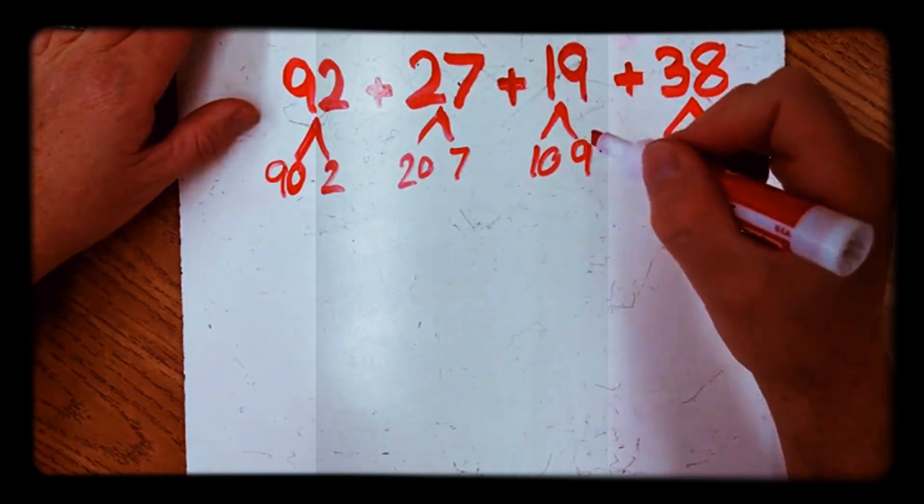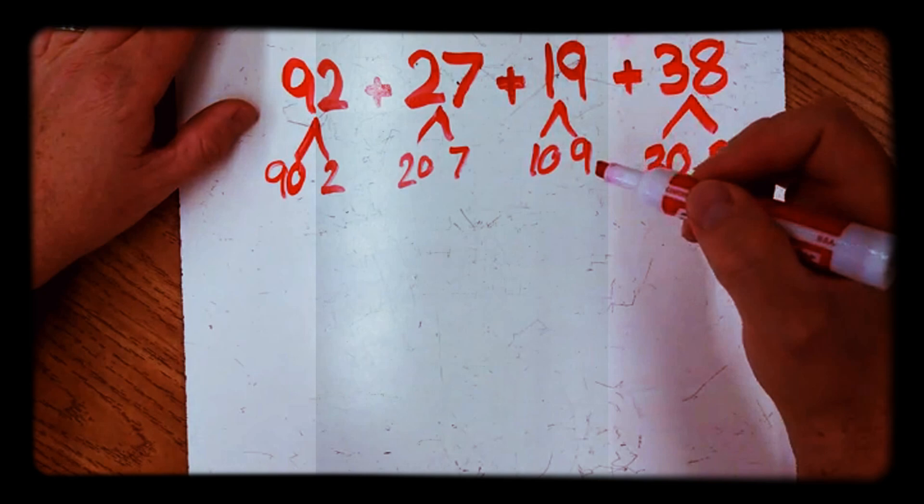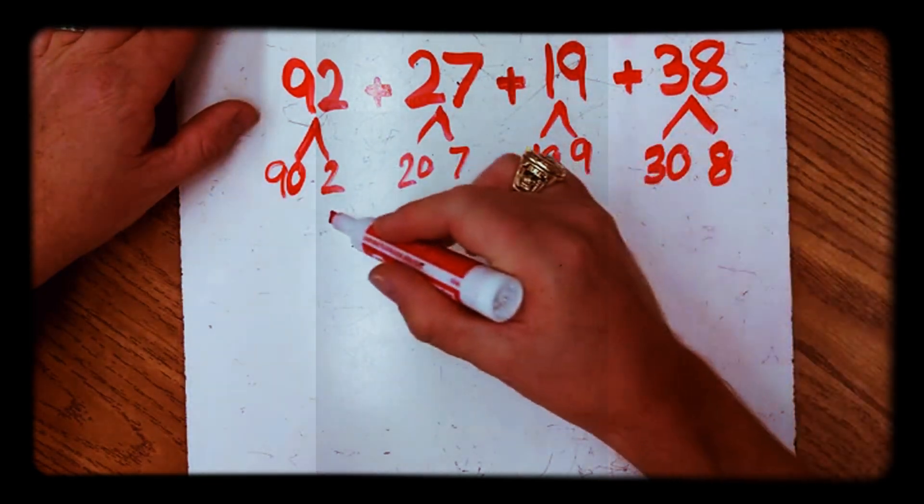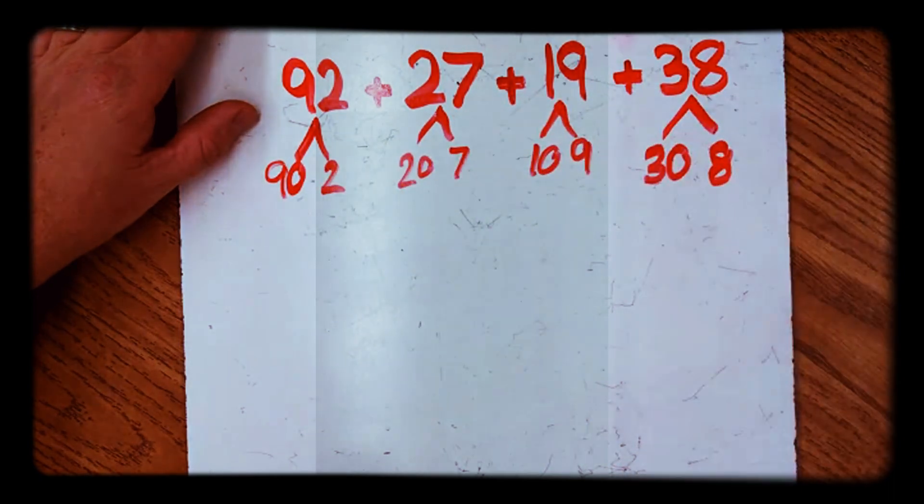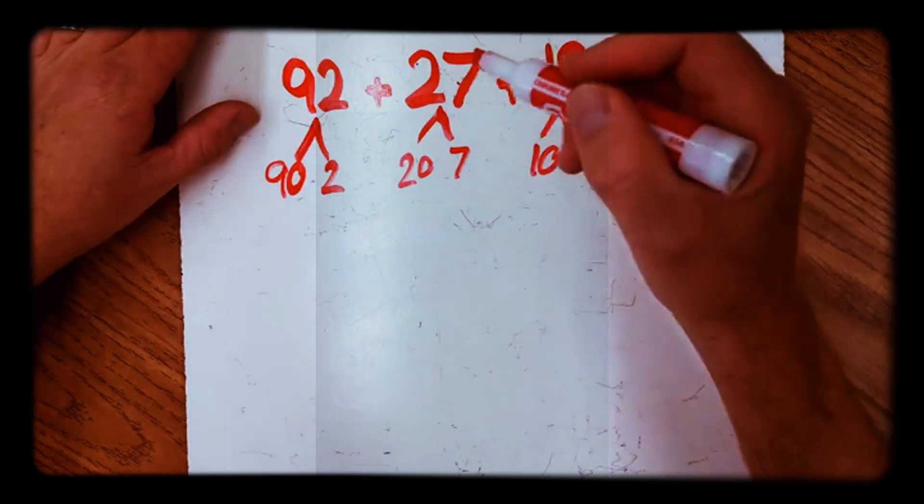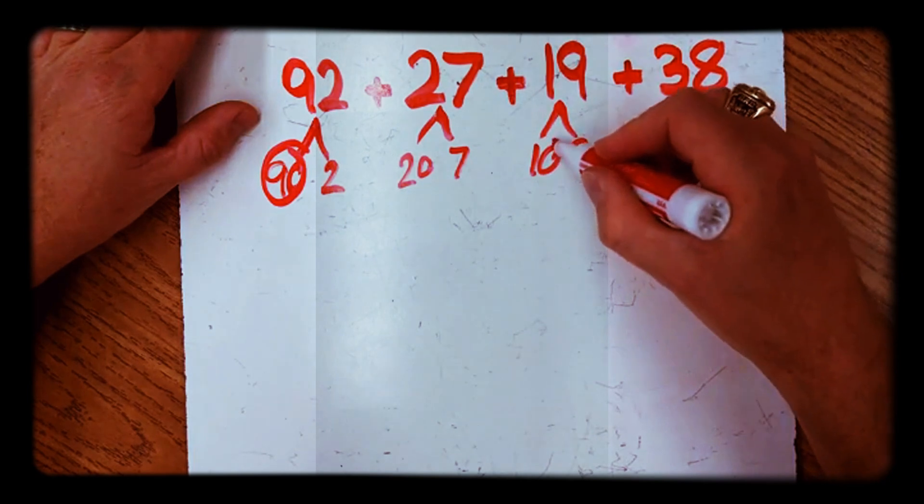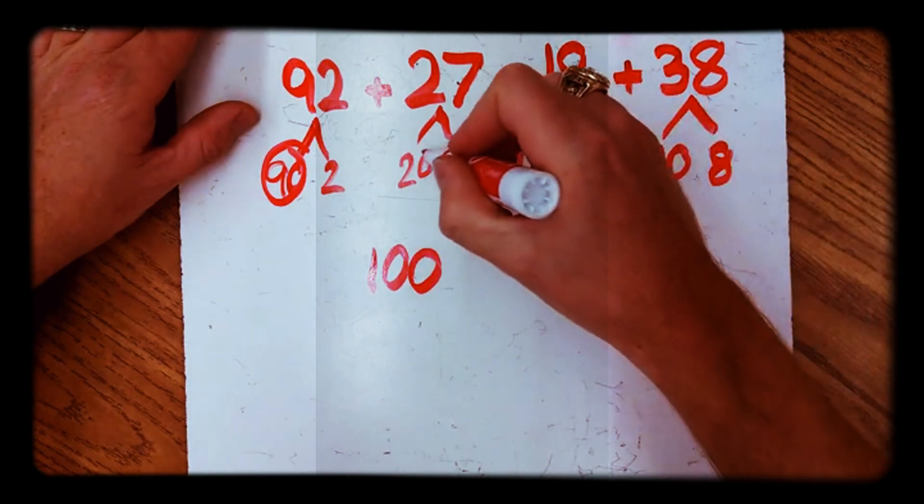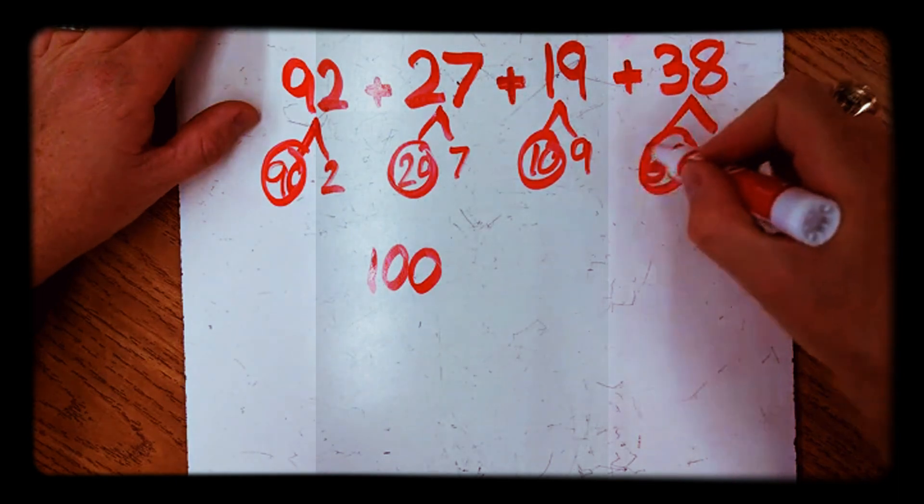The next thing we'll do is look and see, can we combine any of our tens? We're going to shoot for adding our tens first. Can we combine any tens to make a hundred? I spot a 90 and a 10, and that gives me 100. So we'll get that out of the way.